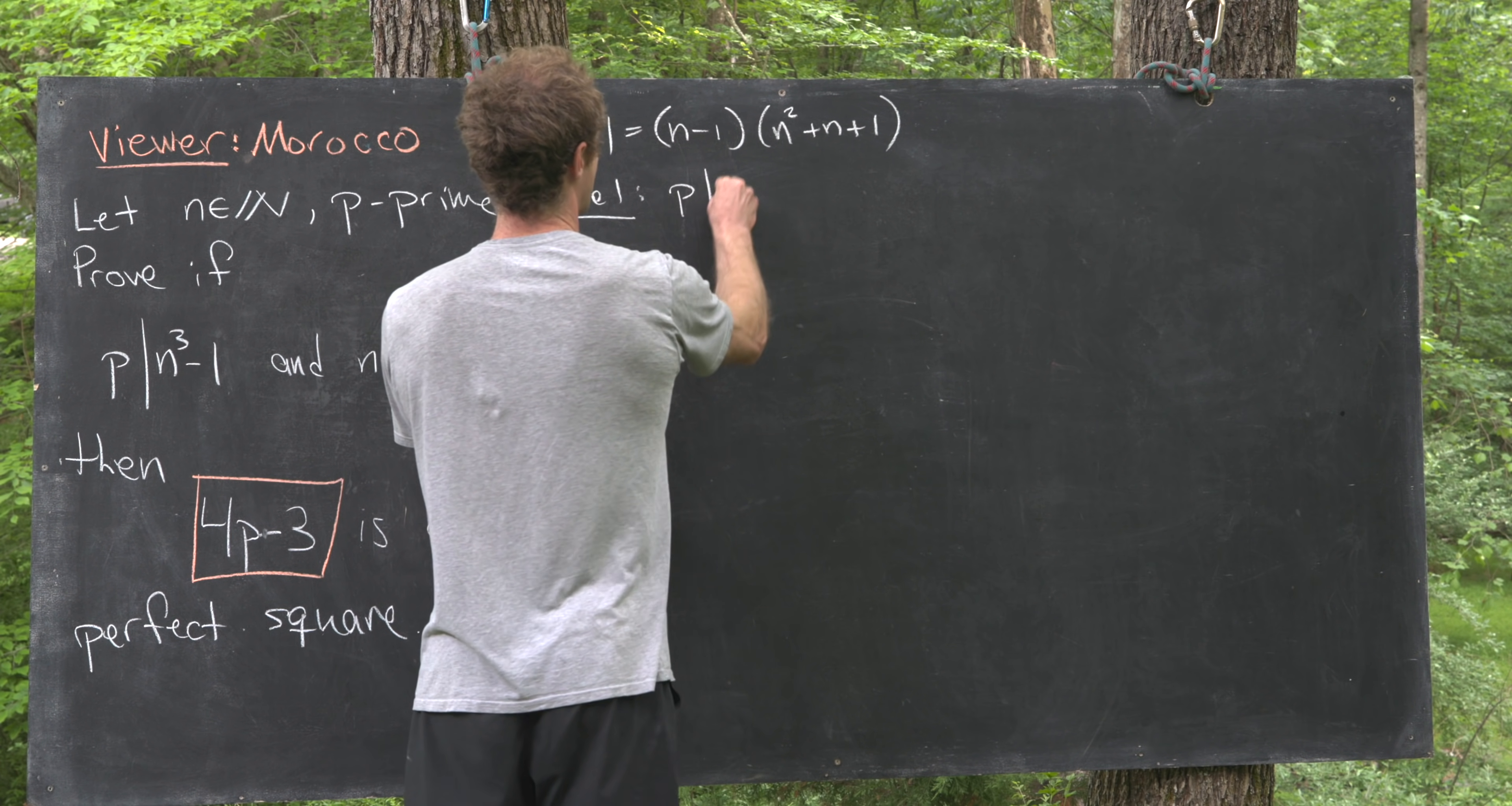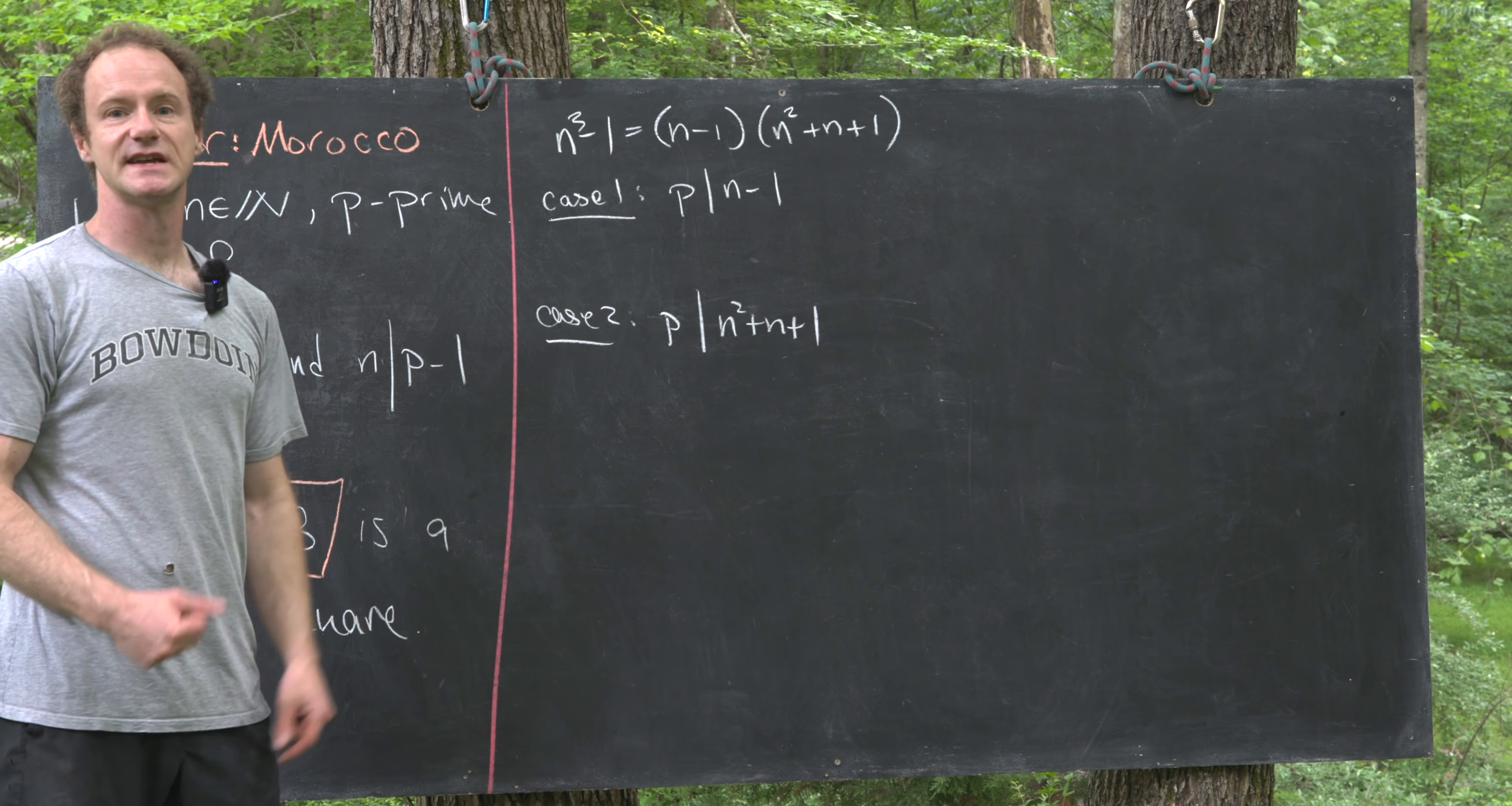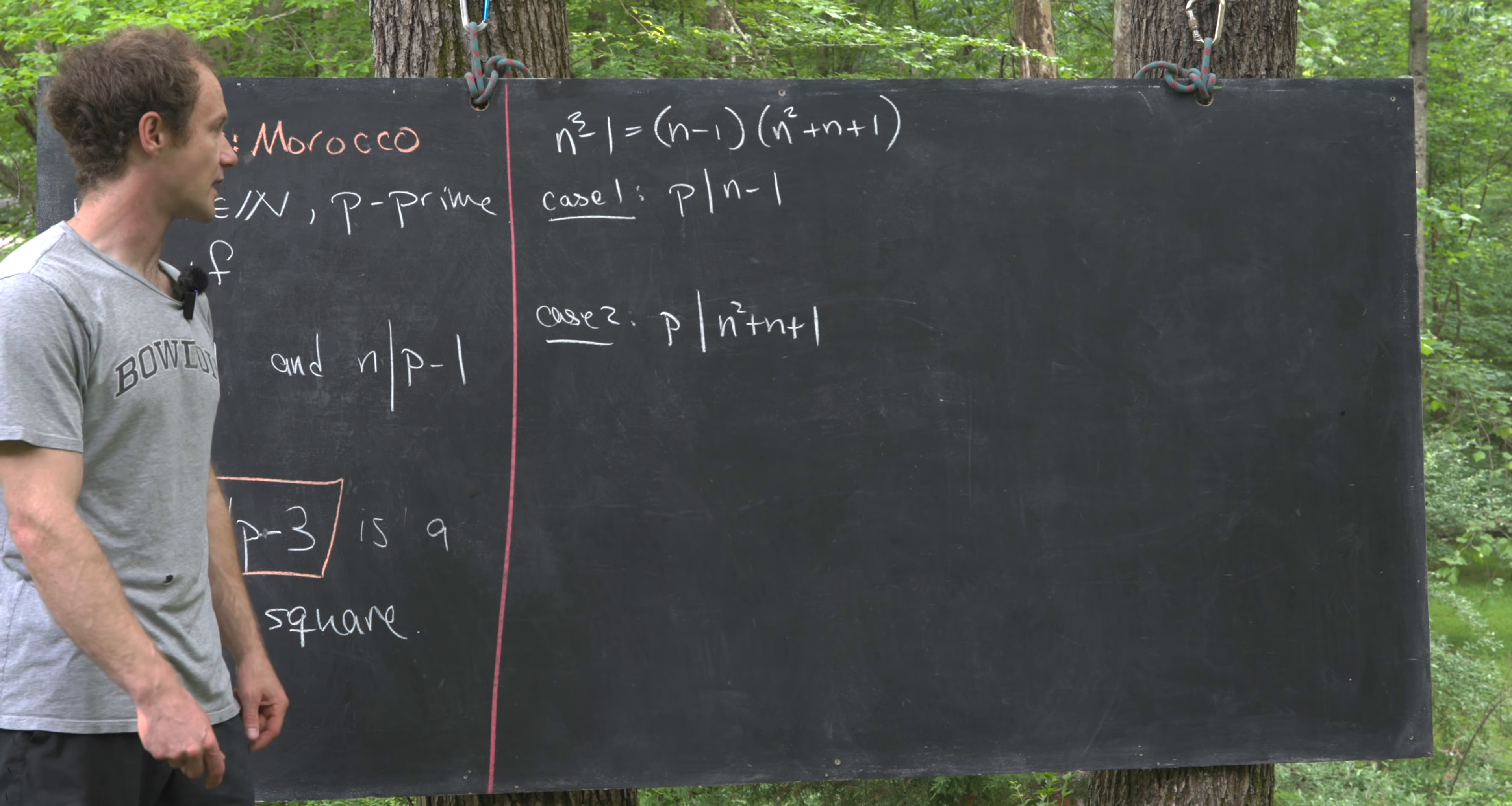Either p divides n-1, or case 2 is p divides n²+n+1. That's a standard property of prime numbers: if a prime number divides a product, then it must divide one of the terms from the product.